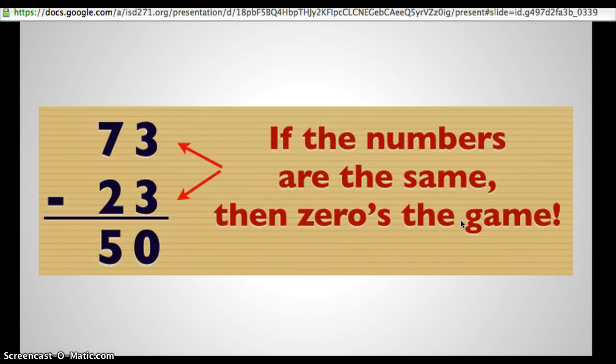The third part of the rhyme says, if the numbers are the same, then zero's the game. Anytime you have two numbers that are the same on top of each other and below each other, zero's the game. So three minus three is zero. Seven minus two, there's more on top. No need to stop. The answer is five.